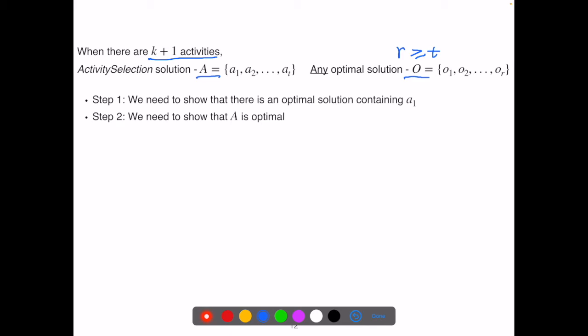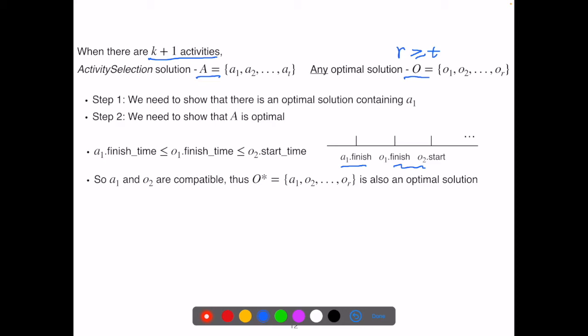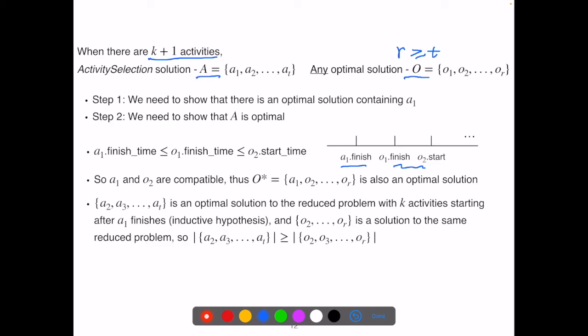First, we show that our greedy algorithm's first choice, a1, is safe. That is, there is an optimal solution that starts with a1. Second, we show that A is optimal. Recall our greedy algorithm sorts activities based on their finish time, and a1 has the earliest finish time. So we know o1 must finish no earlier than a1. o2 is compatible with o1 because they are from the same solution. So it must start no earlier than o1 finishes. Therefore, a1 should also be compatible with o2. Thus, o star, where we replace o1 with a1, should also be an optimal solution, since it has the same number of selected activities as O. This completes the first step.